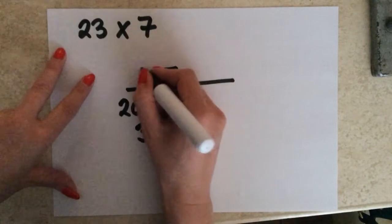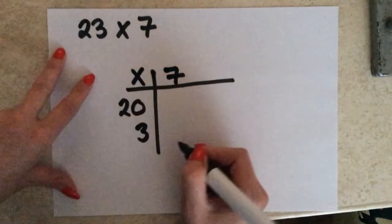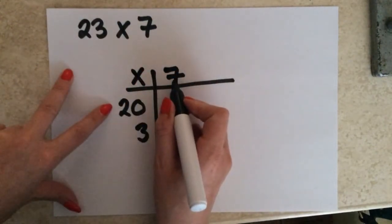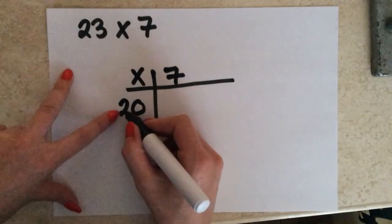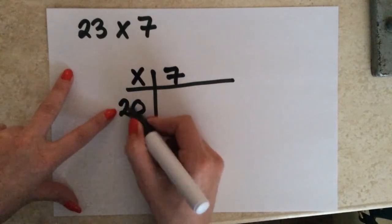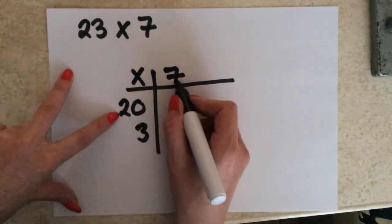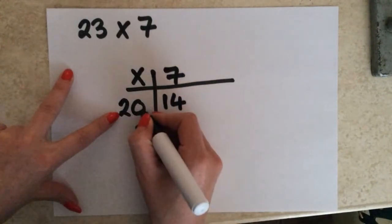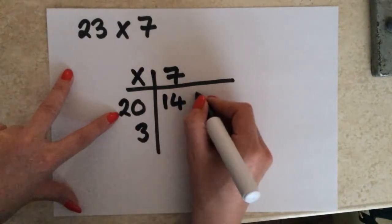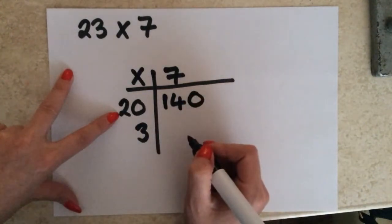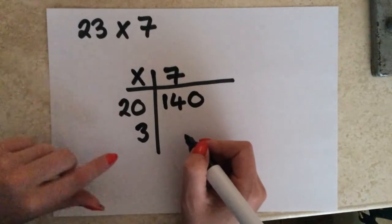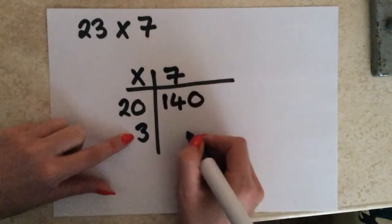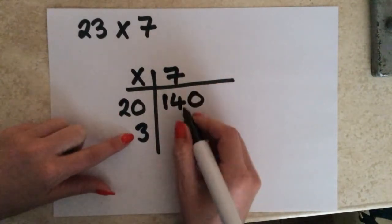Then what we're going to do is we're going to multiply 20 by 7. So the easiest way to do that is to break down this number 20 and multiply 2 by 7, which is 14, and then just add on a 0, which will give you 140. Then I'm going to multiply 3 by 7, which is going to give me 21.